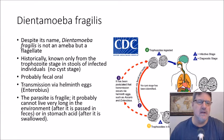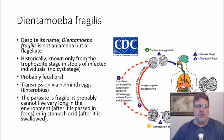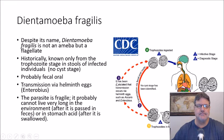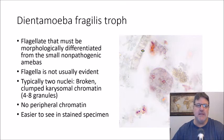Dientamoeba fragilis — hence the name 'dientamoeba' you would think it's an amoeba, but it's not; it is a flagellate. Historically it's known only from the trophozoite stage in stools — there's no known cyst stage. Transmission is probably fecal-oral. It's also been seen in photographs where it appears to tag along with pinworm eggs, which you can find online. The name 'fragilis' reflects that it's a fragile parasite that experts believe cannot live very long in the environment after being passed in feces.